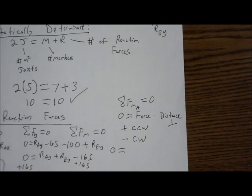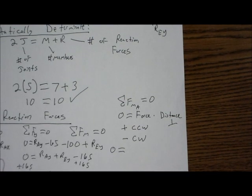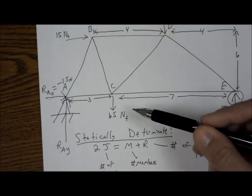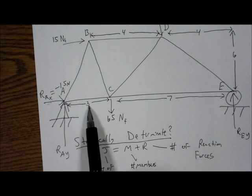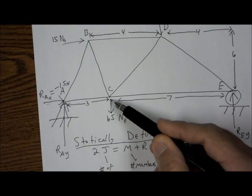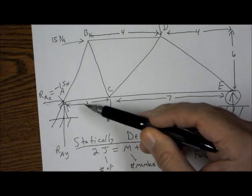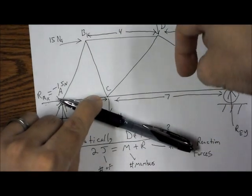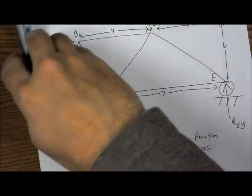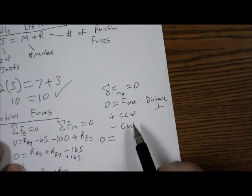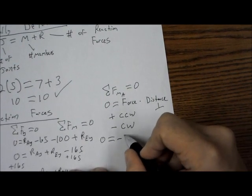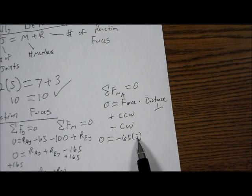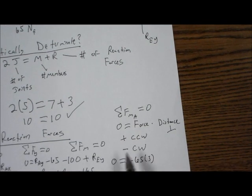So we'll set this up. Zero equals. So we're going to go through each of the moment forces. If we start with 65 here, that's 65. And the perpendicular distance to that vector is 3. And is 65 going clockwise or counterclockwise around point A? Well, if we imagine there to be a lever here and it's going with a downward force, that's going to be going clockwise. And clockwise is negative. So we're going to say, it doesn't matter where you put the negative, I'm going to say negative 65 times 3. The force times the distance. It's positive if it's going counterclockwise. It's negative if it's going clockwise.